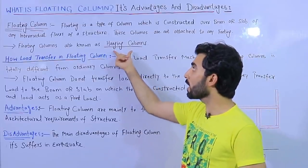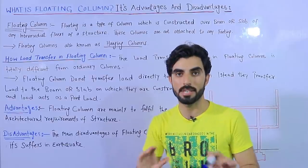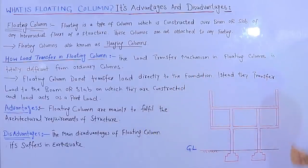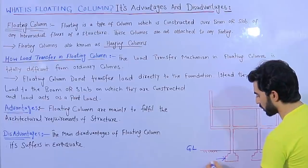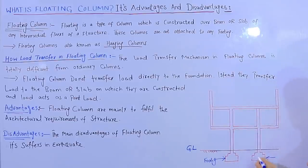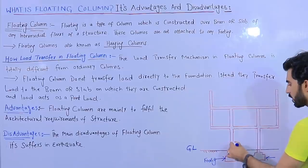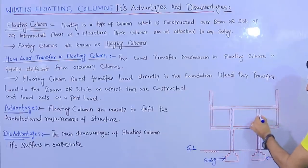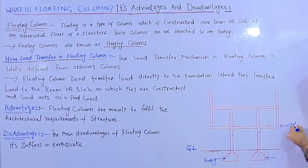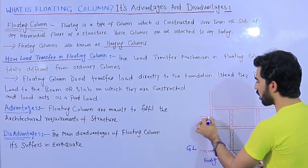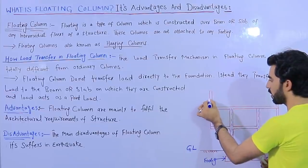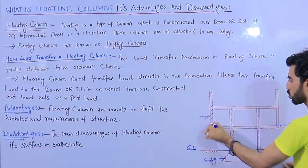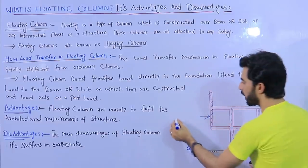Hanging columns and floating columns are the same thing. Now you can see the diagram for the floating column. These two are footings and the foundation. This is the first footing and this is the second footing. You can see these columns here, and this is an RCC slab. These two columns here are called floating columns.